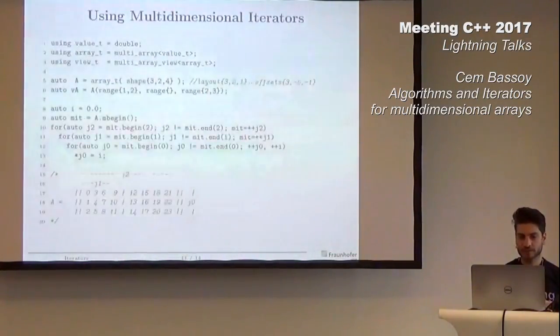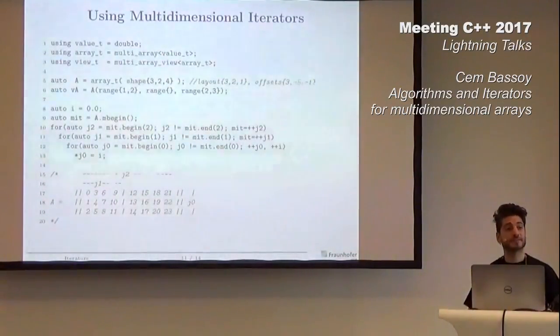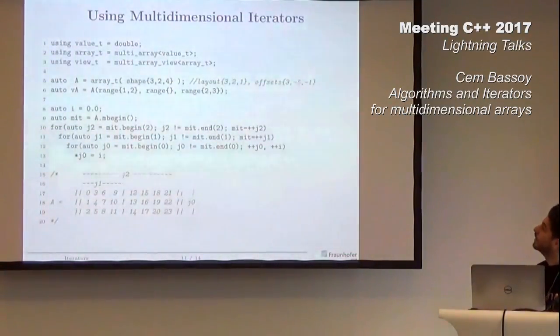How does iteration over a complete multi-index space look like? Well, for each dimension we would first instantiate the multidimensional iterator and then iterate with the help of stride-based iterators over the specific dimension. Quite simple.